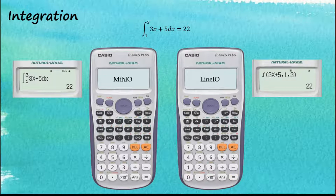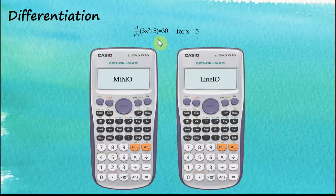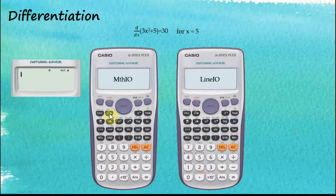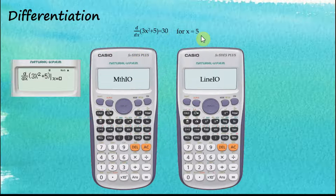Let's see another example — differentiation. Starting with Math Input, we insert the container using shift differentiation. The function is three x squared plus five, so we enter three alpha x squared plus five. We want to differentiate at x equals five, so we navigate the cursor to the next subcontainer using the right arrow key, key in five, and press equal to get the answer.